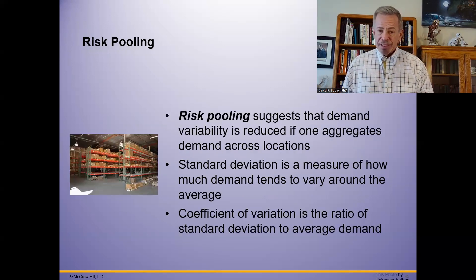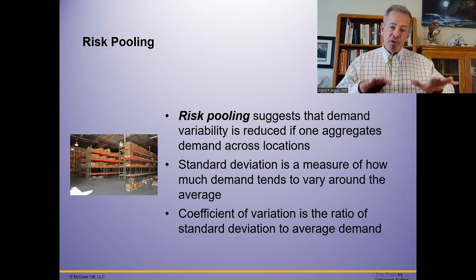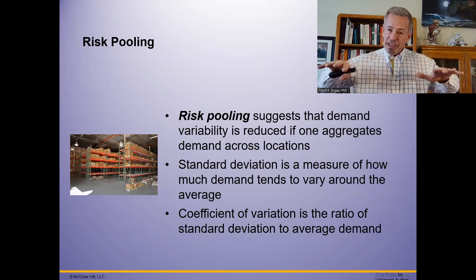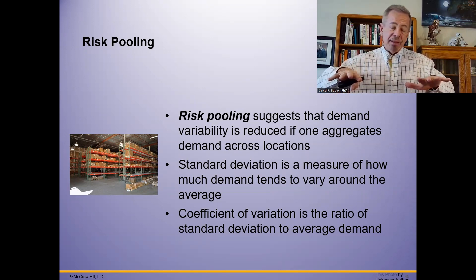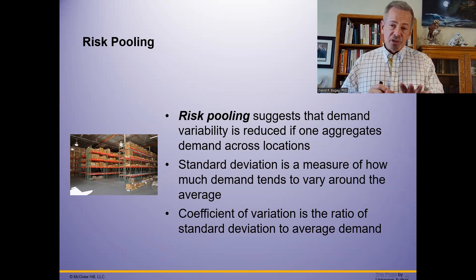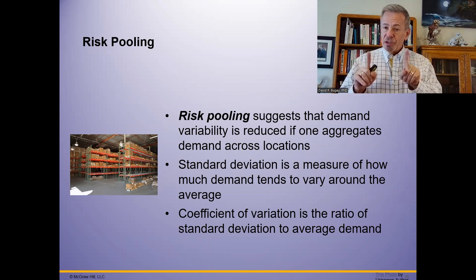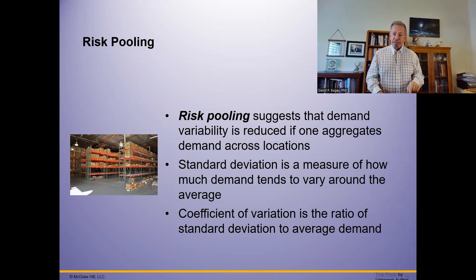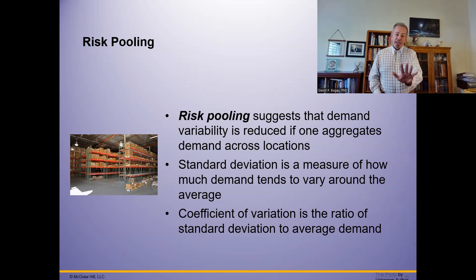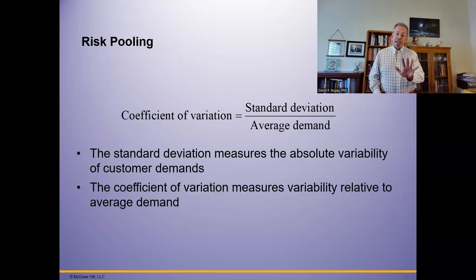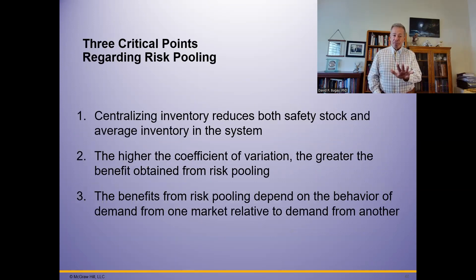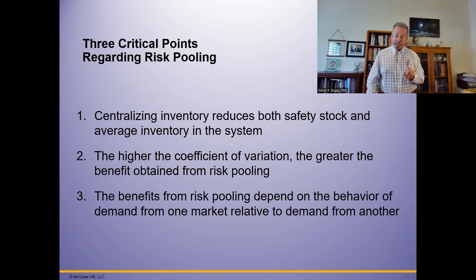Risk pooling suggests that demand variability reduces if you aggregate demand across locations. The more locations you have, the better off you can be with risk pooling. The textbook provides an illustration of going from two distribution points to one, showing the difference. The coefficient of variation — standard deviation divided by average demand — measures that variability.